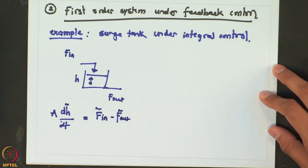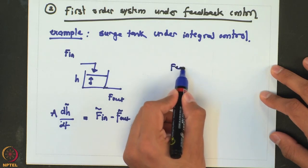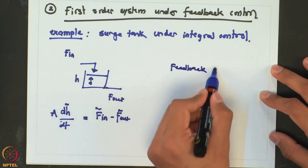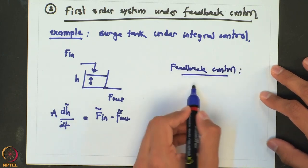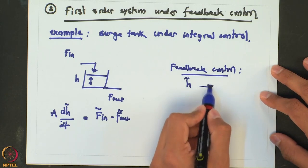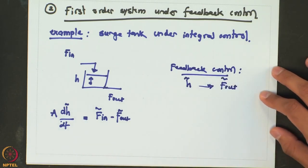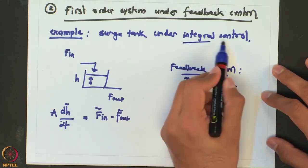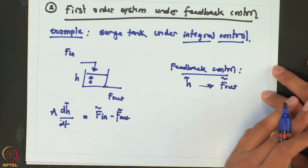These are deviations in input flow and deviations in outlet flow. When we talk about feedback control, that means we are going to measure the deviation in height and accordingly change the outlet flow rate. That is the philosophy of feedback control. The type of feedback control we are going to look at is integral control — at this point I will just give you the form of this.